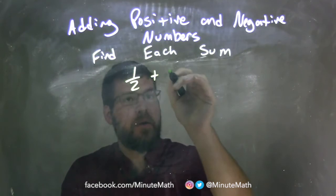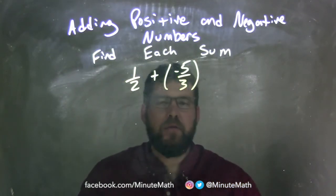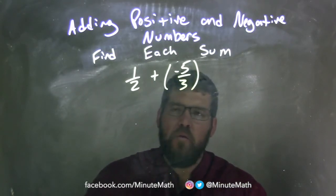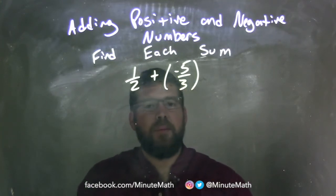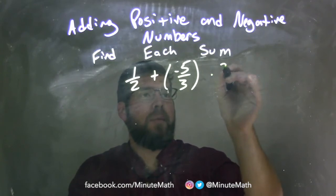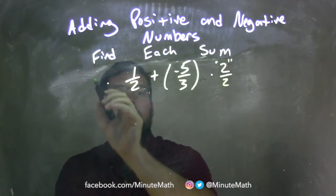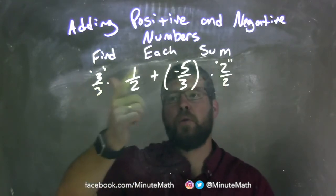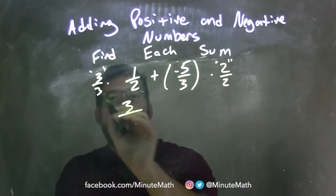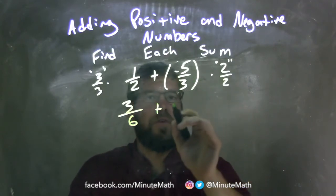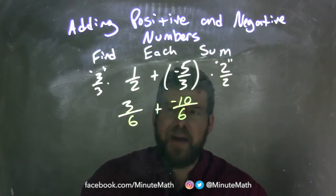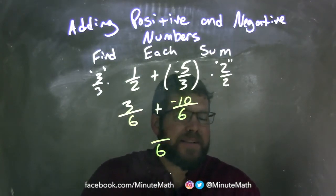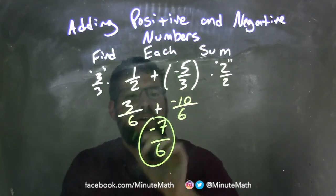1/2 plus negative 5/3. I need to find a common denominator — 2 and 3 both go into 6. I multiply negative 5/3 by 2/2: negative 5 times 2 is negative 10, and 3 times 2 is 6. I multiply 1/2 by 3/3: 3 times 1 is 3, and 3 times 2 is 6. Now I have the same base. 3 plus negative 10 comes out to be negative 7. My final answer is negative 7/6.